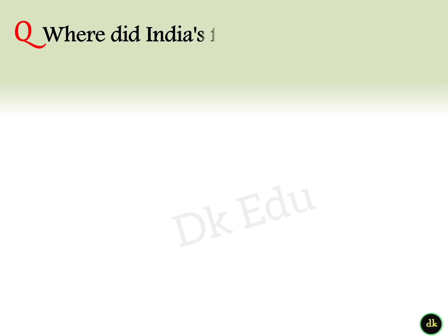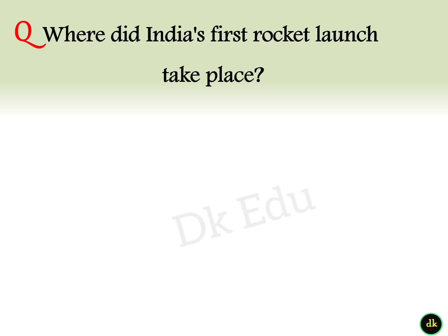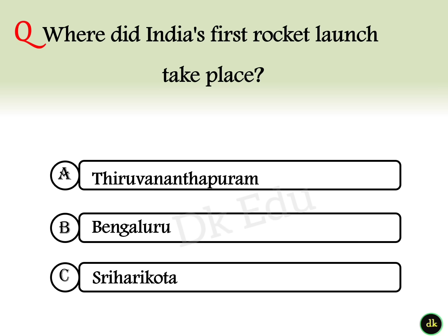35th question: Where did India's first rocket launch take place? Answer option A: Thiruvananthapuram.